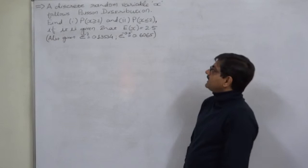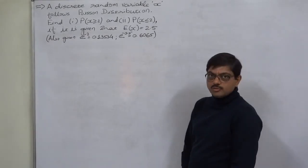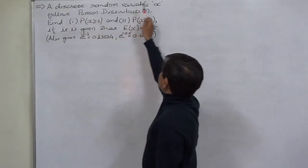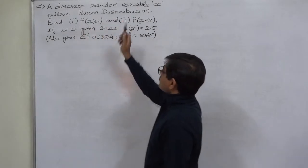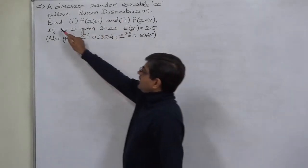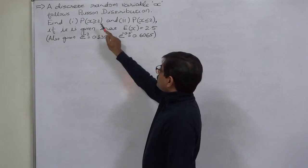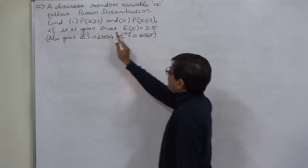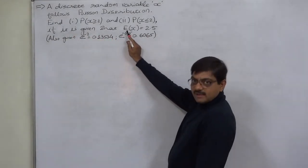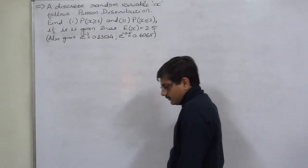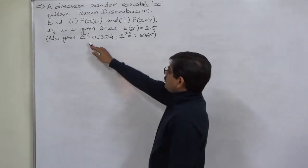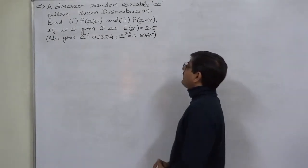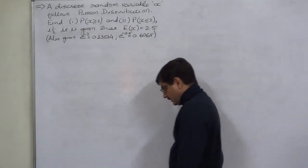Hello friends. The new case is from Poisson distribution. The problem given is: a discrete random variable X follows Poisson distribution. Find out P(X ≥ 2) and P(X ≤ 2), given that E(X) — that is the expected value of X — equals 2.5. Also given: e^(−2) = 0.13534 and e^(−0.5) = 0.6065.